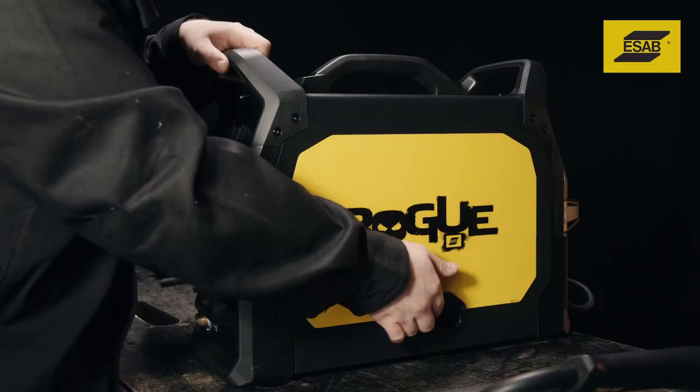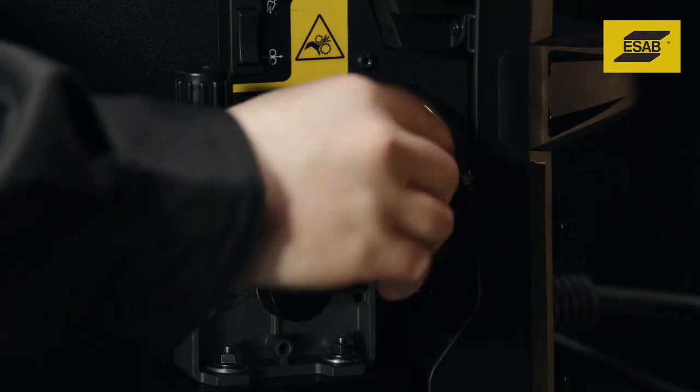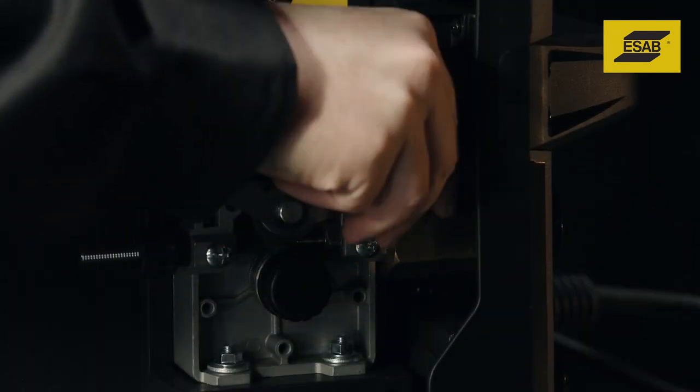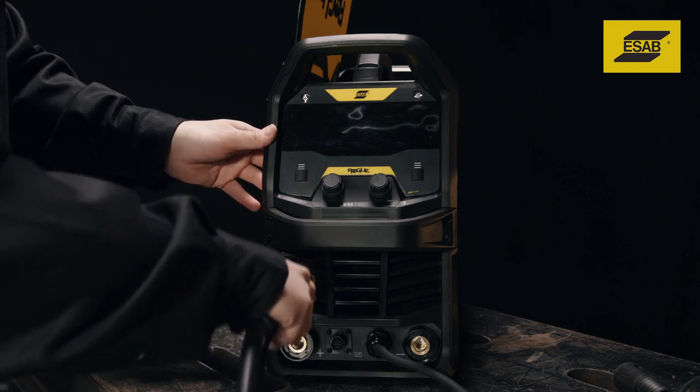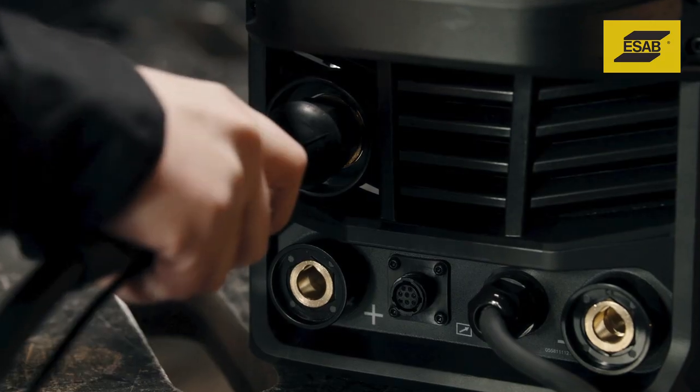Installing the MIG gun. Open the wire feed compartment and back out the locking screw on the MIG gun adapter. Grab the back end of the MIG gun and push the power pin firmly into the adapter.